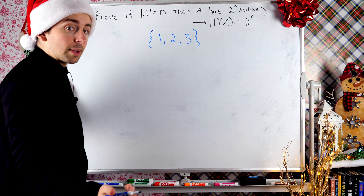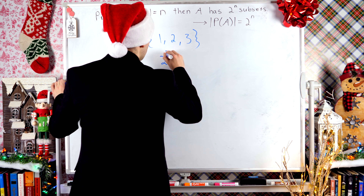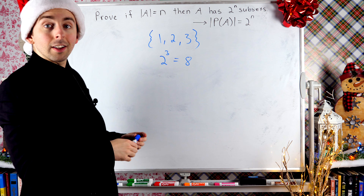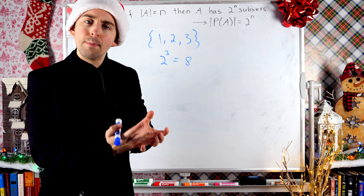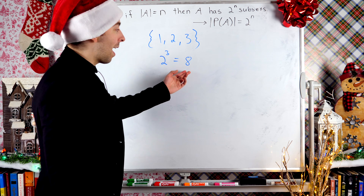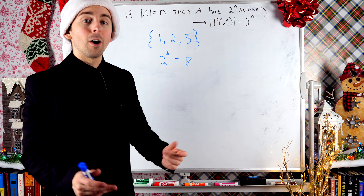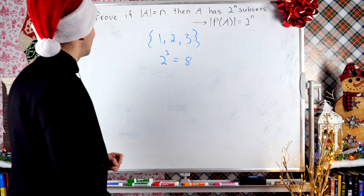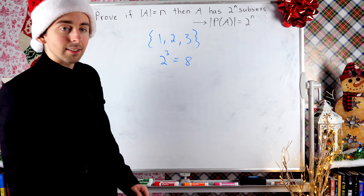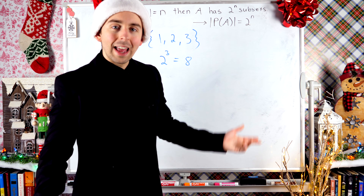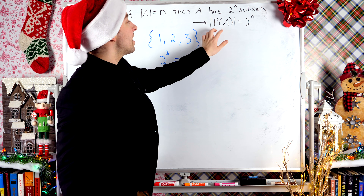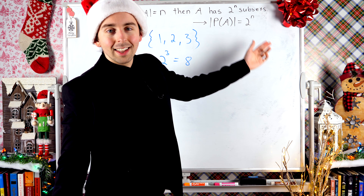It's got three elements, so its number of subsets is two to the power of three, which is equal to eight. If we took all eight of those subsets and put them into one big set, that's called the power set, which would then also have eight elements. So we're going to prove today that if a set A has n elements, then A has two to the power of n subsets, and that also means the cardinality of the power set of A is two to the n.